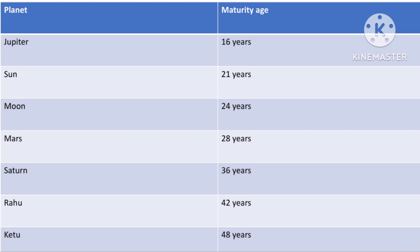The maturity age corresponding to Mars is 28 years. Mars represents the actions you take, your drive, aggression, power, and anger. At the age of 28 you should be mature enough to use your power in the right way, control your anger, and not randomly get angry at anybody. So 28 years is the age when you are considered mature enough to deal with your own power, anger, and authority.